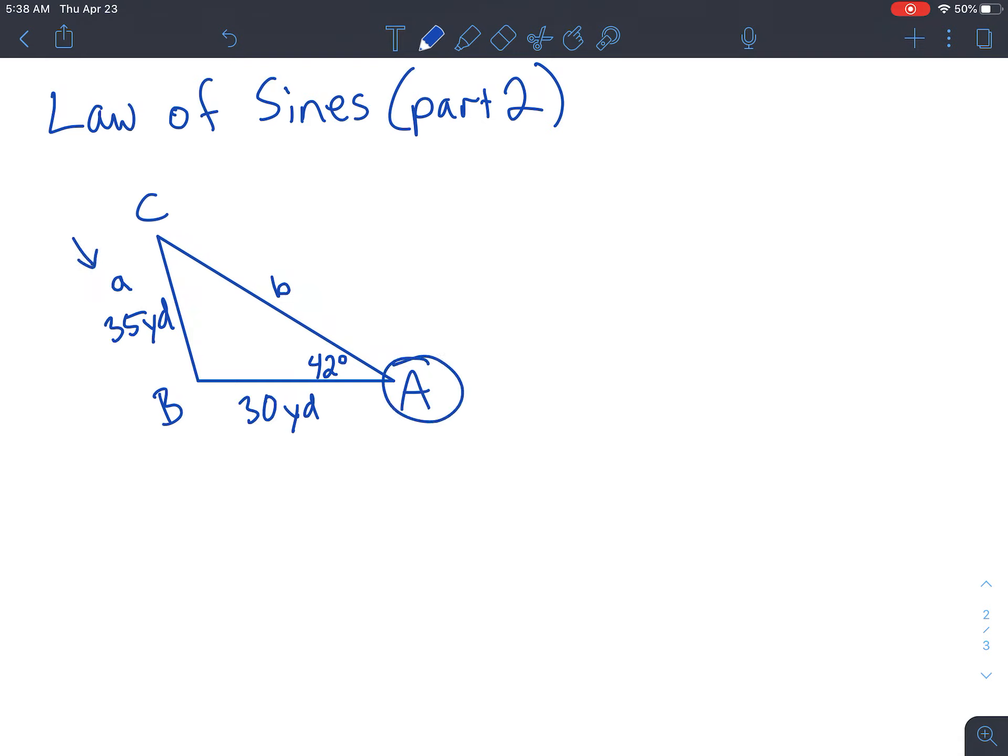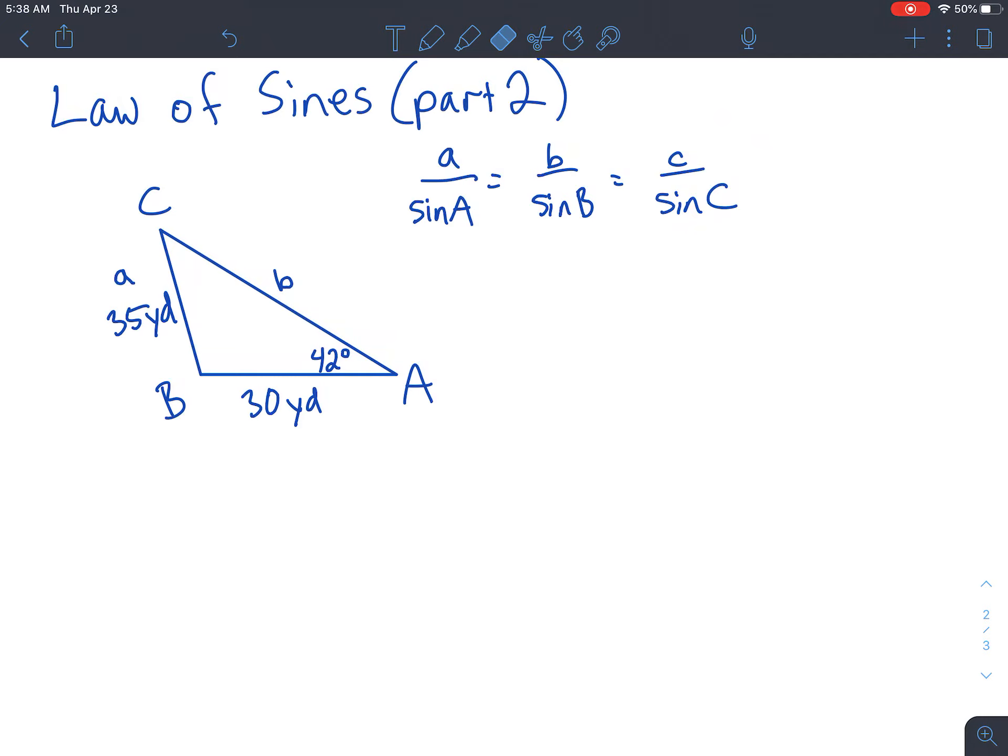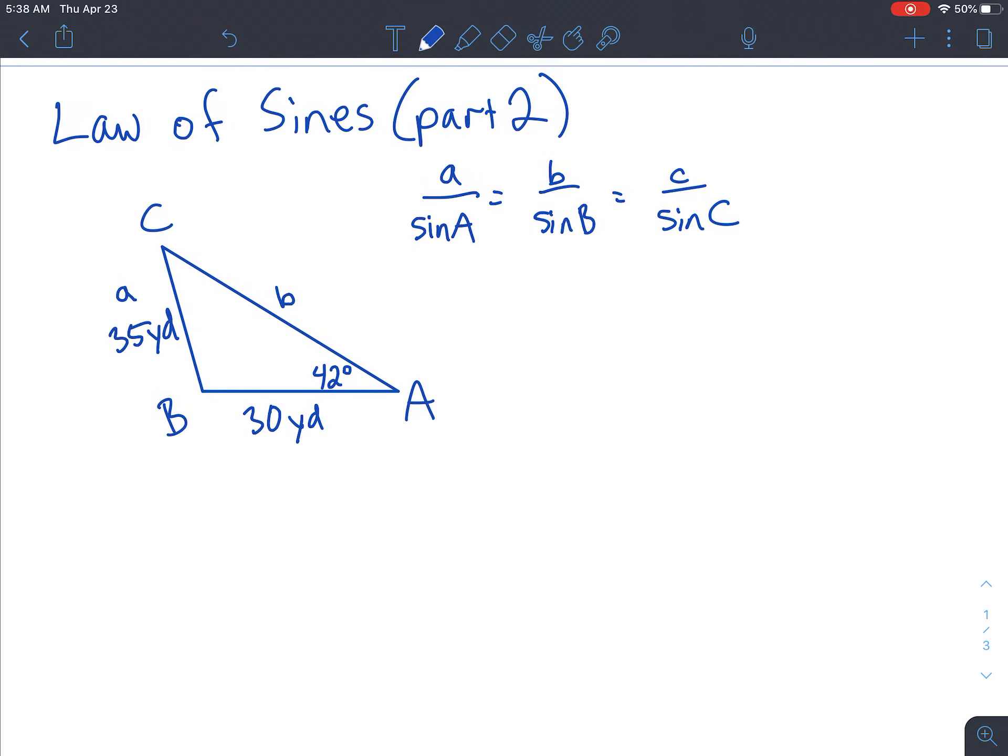And it looks like we have because large A right here, 42 degrees, lines up with little a right here, 35 yards, which is the one that makes it so that we can use the Law of Sines. Because once again, the Law of Sines is a over sin A equals b over sin B equals c over sin C. So you have to have one of these things complete in order to use it. But never fear, if you don't have one of those complete, you will be able to use the Law of Cosines, which we'll talk about next week.